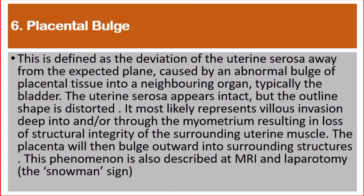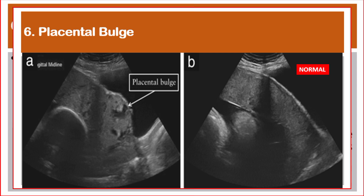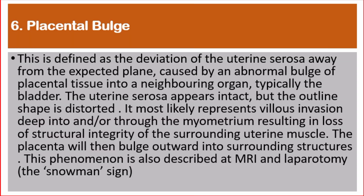Number 6: Placental bulge. This is defined as the deviation of the uterine serosa away from the expected plane, caused by an abnormal bulge of placental tissue into a neighboring organ, typically the bladder. The uterine serosa appears intact, but the outline shape is distorted. It most likely represents villous invasion deep into and/or through the myometrium, resulting in loss of structural integrity of the surrounding uterine muscle. The placenta will then bulge outward into surrounding structures. This phenomenon is also described at MRI and at laparotomy as a snowman sign.